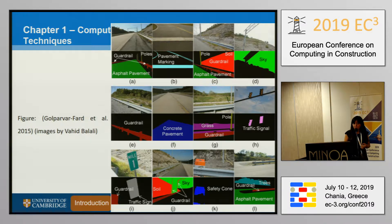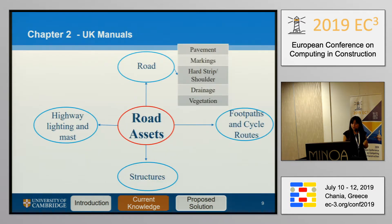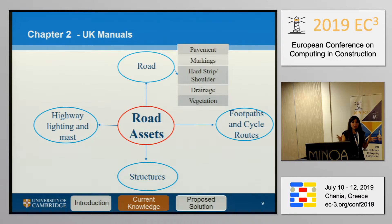Since the geometry and defects might be similar for most road assets, we took manuals from four different areas of the world, preferring English manuals, to check which were the main categories of road assets. For the UK manuals, we have the road category, which describes pavement, markings, drainage, and vegetation — everything is more or less inside the road category.